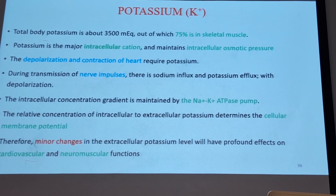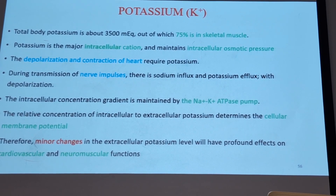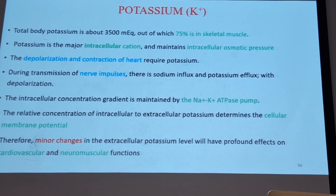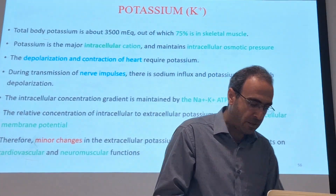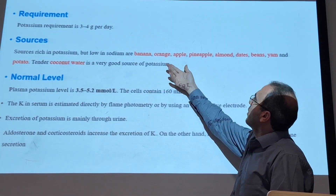Potassium concentration in the body is about 4 to 5 mEq/L. If it increases or decreases even a little, it leads to unrest in cardiac output and can lead to death. So all the time when someone comes to the emergency department, we measure potassium and we have to fix it. The main dietary sources of potassium are banana, orange, apple, pineapple, dates, beans, and coconut.